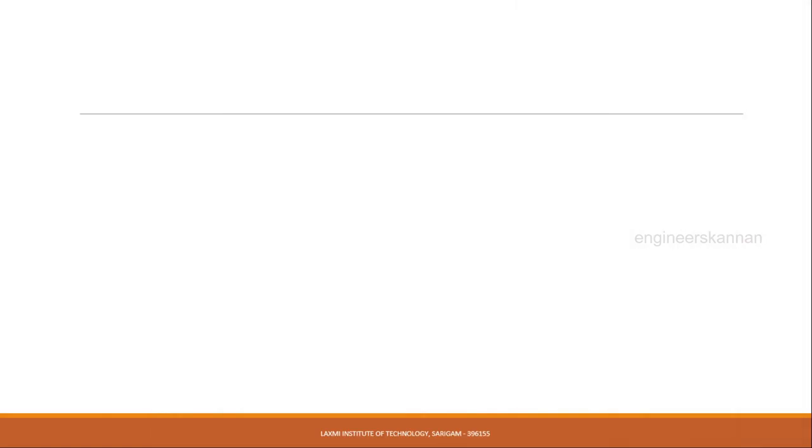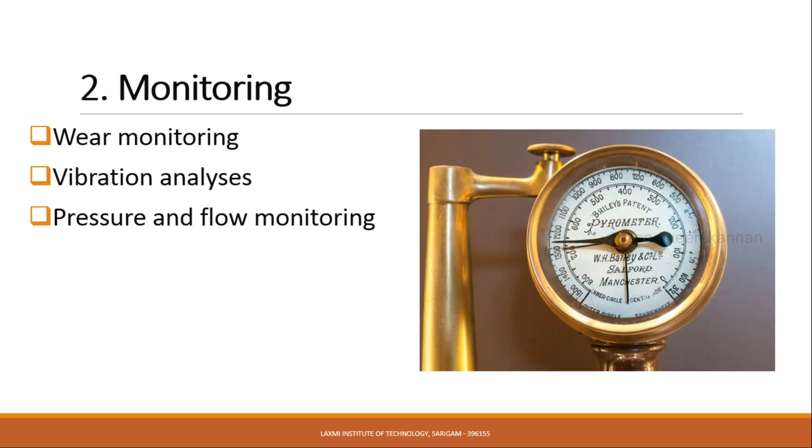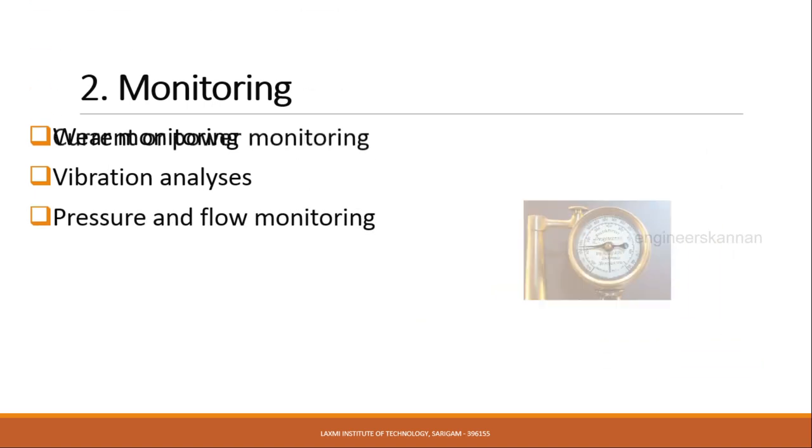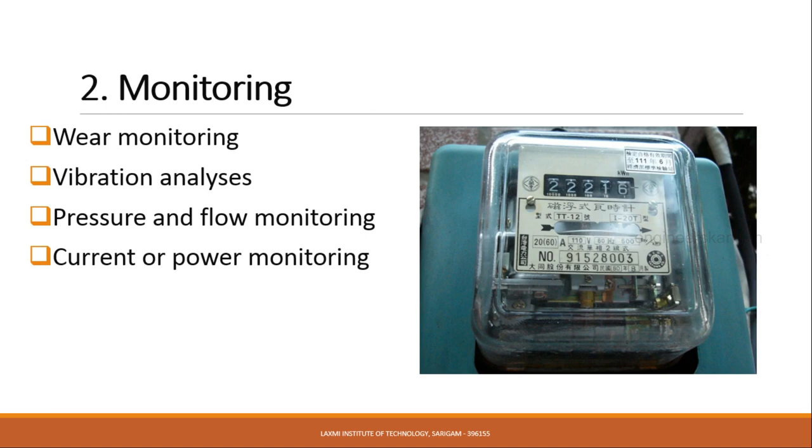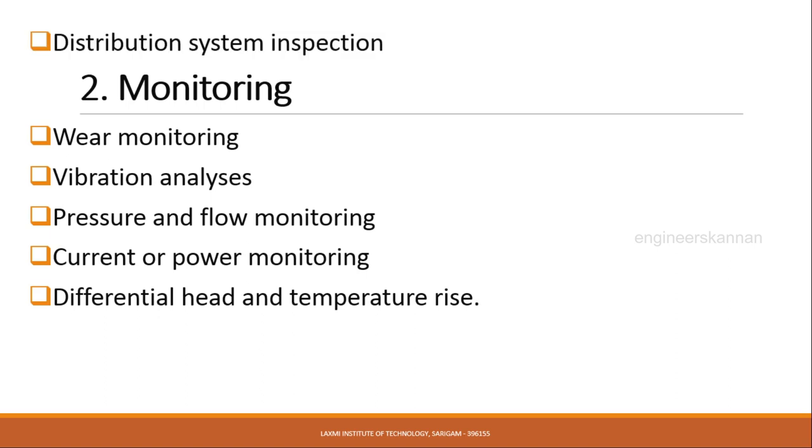The second thing is monitoring. Monitoring in conjunction with operations and maintenance can be used to detect problems and determine solutions to create a more efficient system. This includes bearing monitoring, vibration analysis, pressure and flow monitoring, current or power monitoring, differential head and temperature rise across the pump, and distribution system inspection for scaling or contaminant filter.